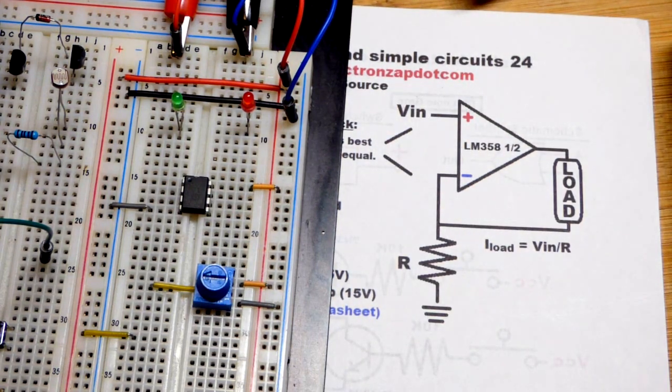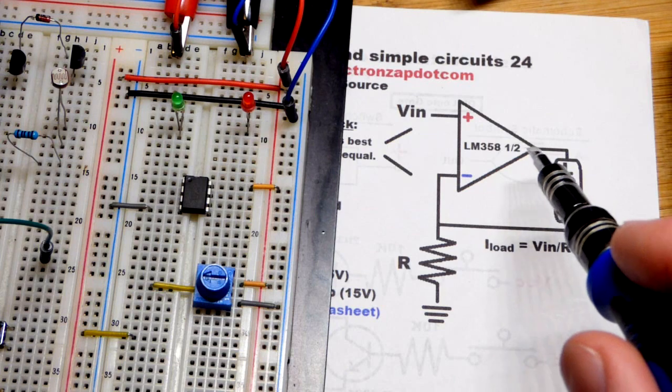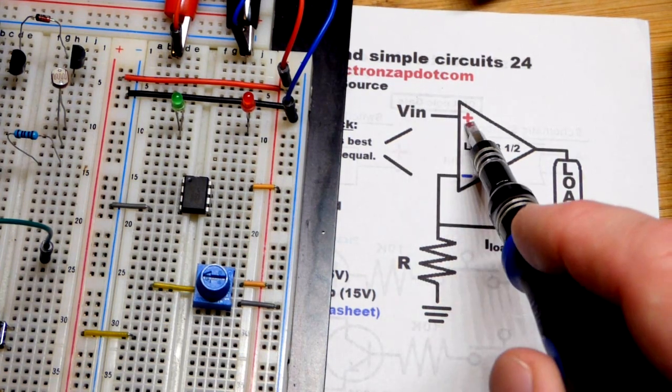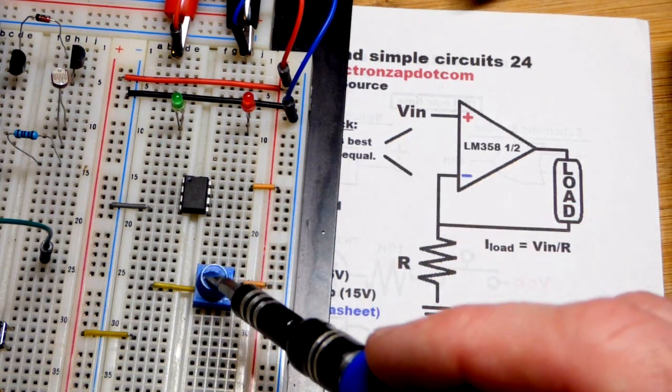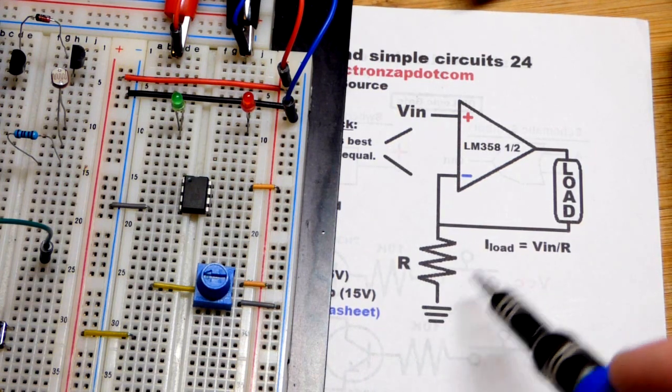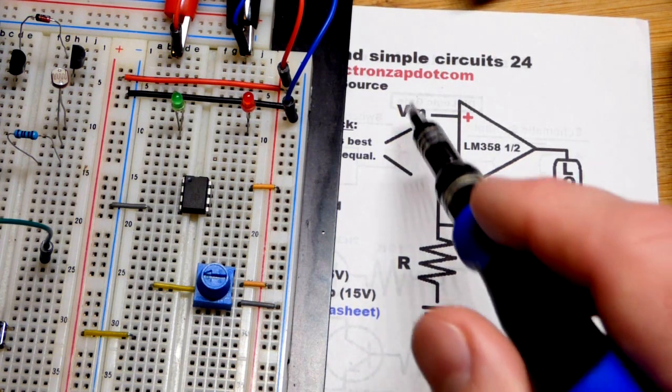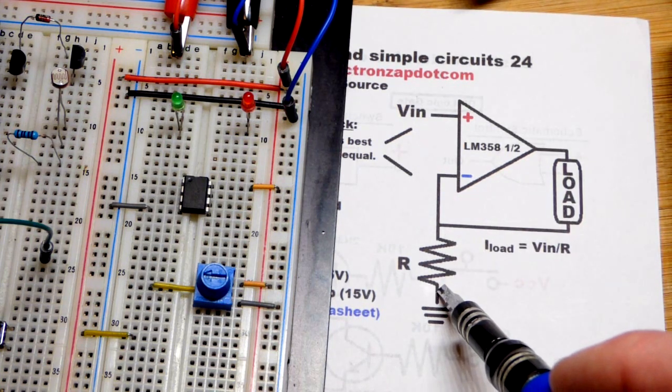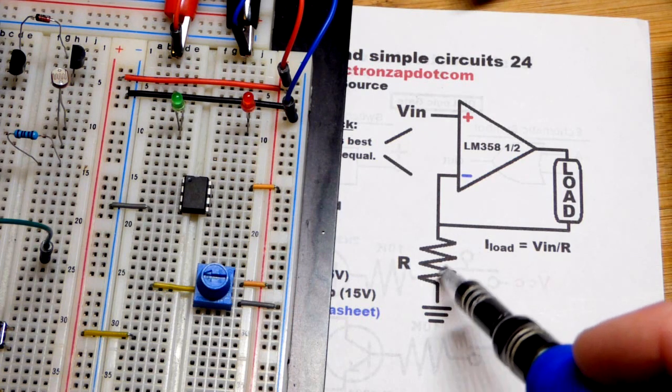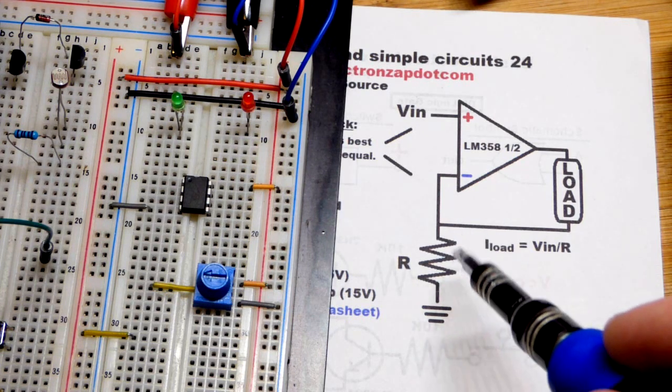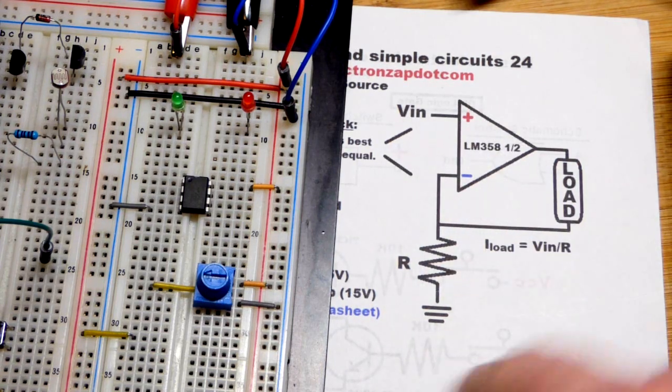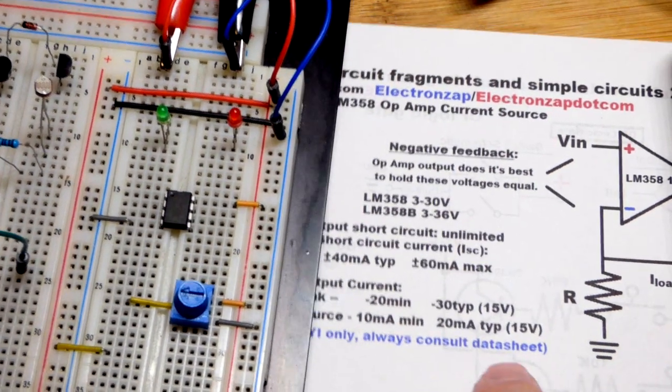It's a current source. The output is going to output a certain amount of current based on the voltage that we input to the non-inverting input. We'll provide that with the trim pot. It'll give us a fraction of the power supply voltage. You just take the voltage that you set there and divide it by the resistance you set here. I'm going to use a 1 kilohm resistor. That means we'll get 1/1000th of an amp for every volt, so 1 milliamp per volt.